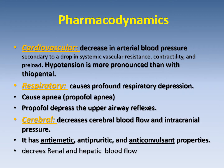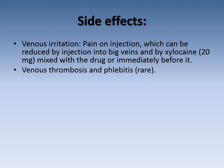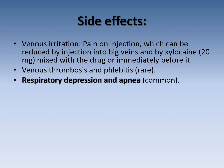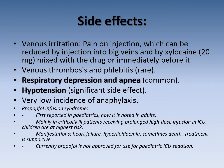It also decreases renal and hepatic blood flow. Side effects: it causes venous irritation and pain on injection, which can be reduced by injection into a big vein and by lignocaine 20 mg mixed with the drug or given immediately before it. Venous thrombosis and phlebitis are rare complications. Respiratory depression and apnea are very common, especially if propofol is injected rapidly. Hypotension is also very common and is much more pronounced with rapid injection. There is a very low incidence of anaphylaxis. Propofol infusion syndrome can occur in the ICU when propofol is infused for pediatric patients, which is why we do not use propofol as a sedative infusion for pediatric patients in the ICU.